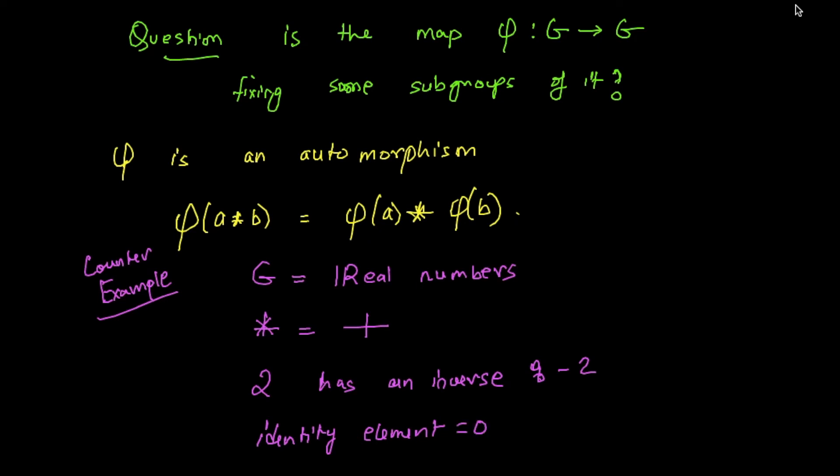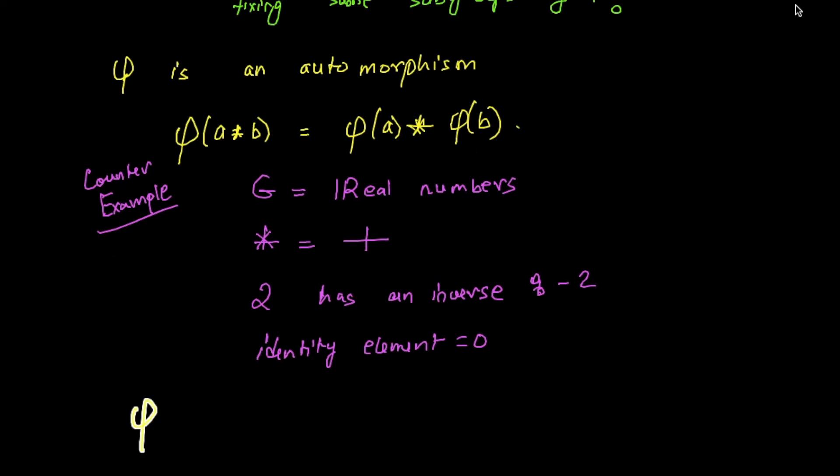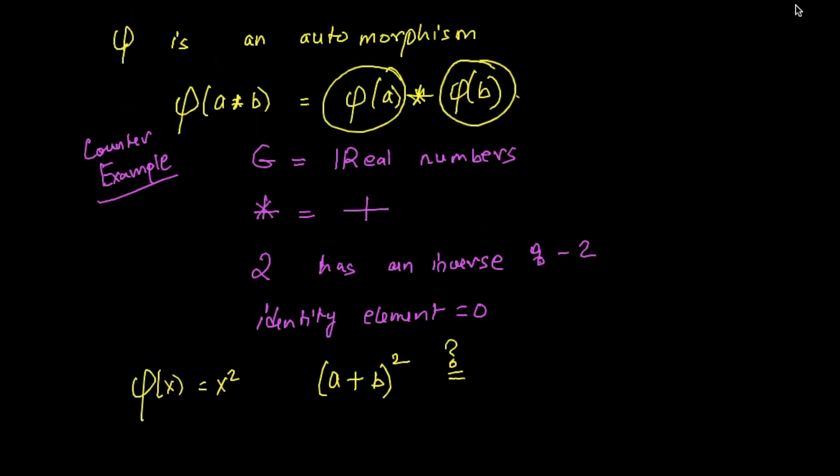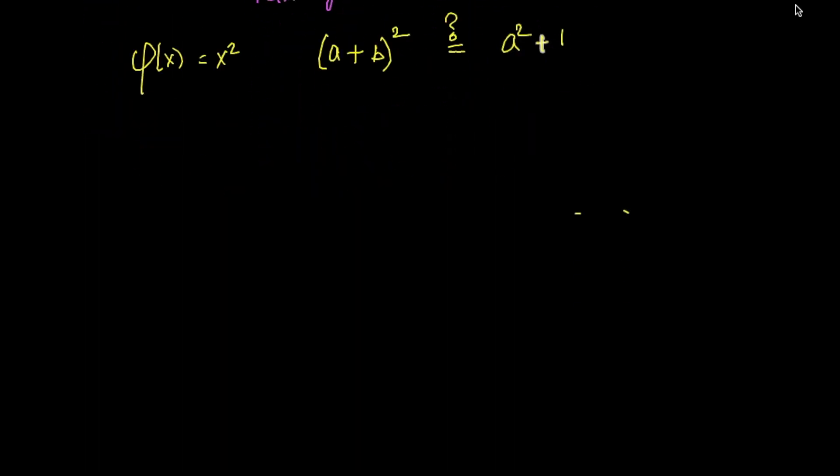It's a very trivial example. Let's look at the map phi which is squaring: phi of x equals x squared. Let's check if this condition holds. Take any two elements, A and B, combine them: A plus B squared. Is it equal to squaring them individually and then adding them up? We all know this is not true. So squaring is not an automorphism from R to R.